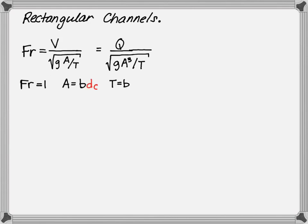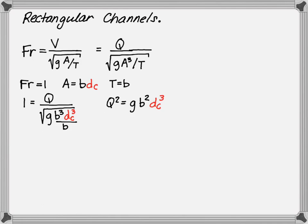If we set the Froude number to one, the area for the rectangular channel is base width times critical depth Dc, and the top width of the channel is the base width. By algebraically rearranging the equation and substituting the area and the top width, the equation can be further simplified: the flow rate squared is equal to gravity times the base width squared times Dc cubed. Isolating the critical depth, Dc is equal to the cube root of the flow rate squared divided by gravity times the base width squared.